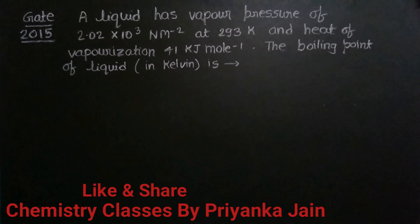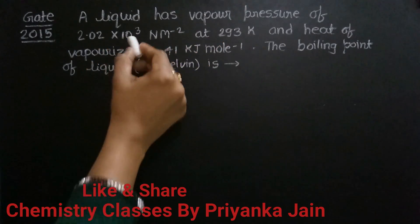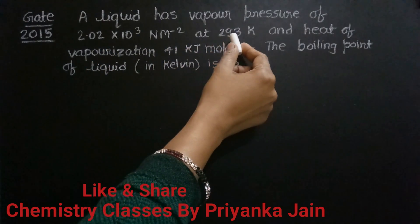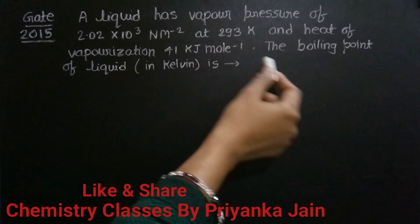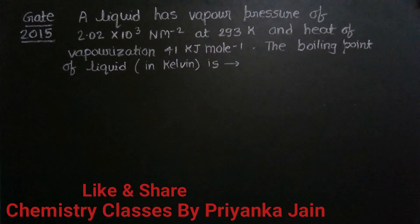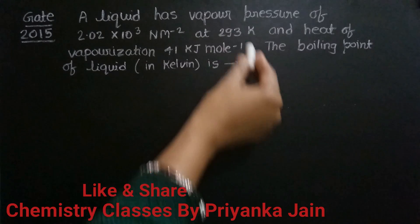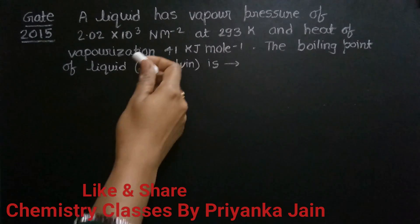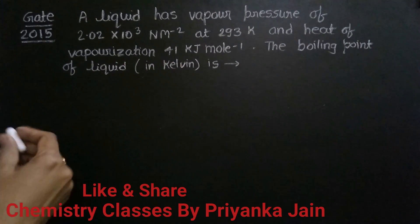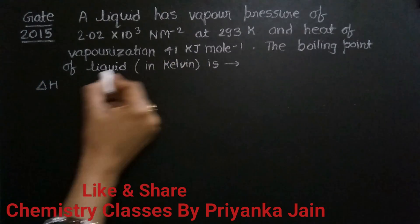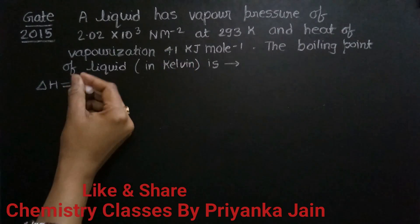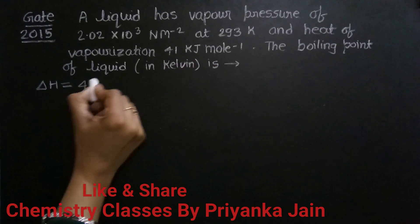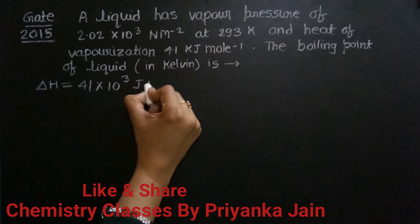Now here is a question from GATE 2015 based on the Clapeyron-Clausius equation. The question states: a liquid has a vapor pressure of 2×10³ N/m² at 293 K, and the heat of vaporization is 41 kJ/mol. We need to find the boiling point of the liquid. We are given ΔH = 41 kJ/mol = 41×10³ J/mol.